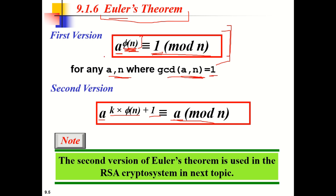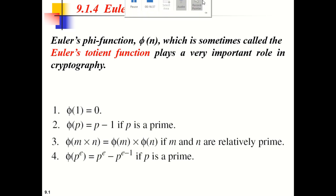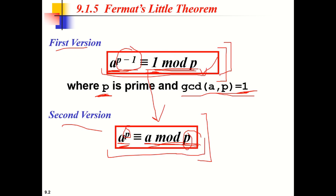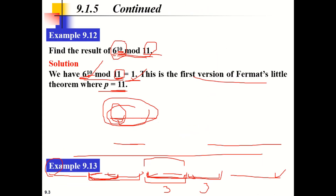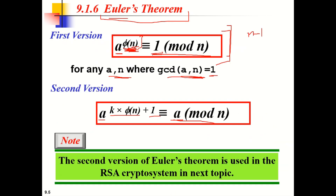Fermat's theorem is a special case because, from the Euler totient function, phi(P) equals P minus 1 when P is prime. So in Euler's theorem, when N is prime, phi(N) becomes N minus 1, which is exactly what Fermat's theorem uses. That is why we can call Fermat's theorem a special case of Euler's theorem.